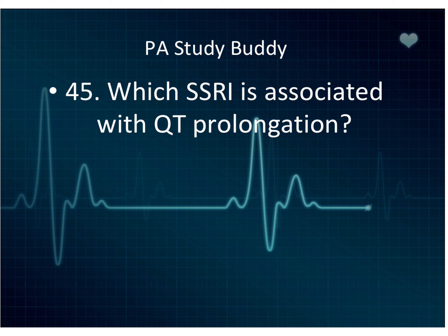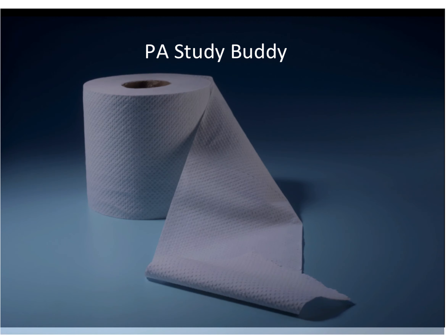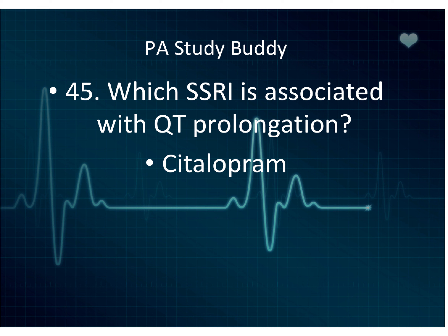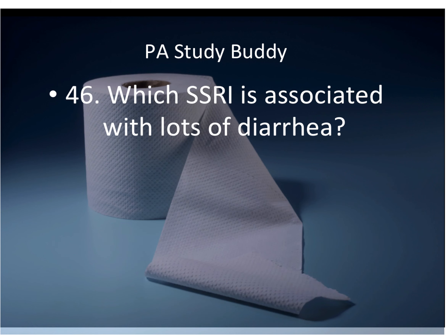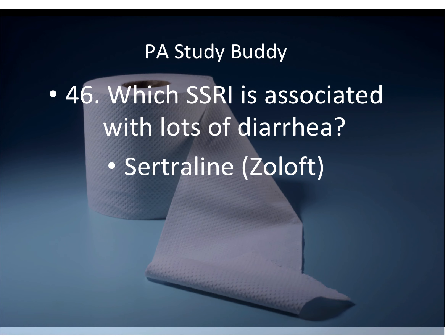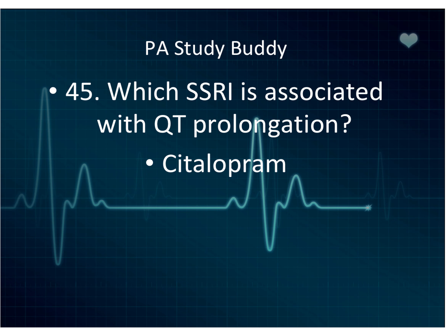Question forty-four: which SSRI is associated with QT prolongation? That is citalopram. They'll give you a scenario with a depressed patient on multiple medications, run an EKG, find QT prolongation, and ask which medication is most likely responsible — citalopram. Question forty-five: which SSRI is associated with lots of diarrhea? Sertraline (Zoloft). So: sertraline equals diarrhea; citalopram equals QT prolongation.